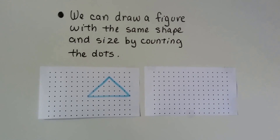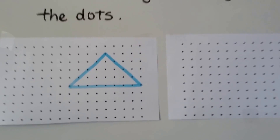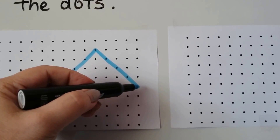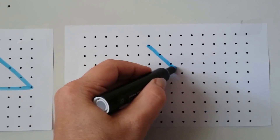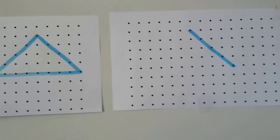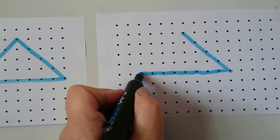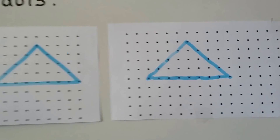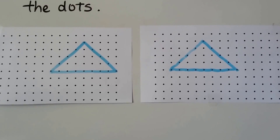We can draw a figure with the same shape and size by counting the dots — we'll count how many units we go. At the top here it goes one, two, three, four units down on an angle. So we could do that here: one, two, three, four units down. Then it went one, two, three, four, five, six, seven, eight units across. So we can do that: one, two, three, four, five, six, seven, eight units across and one, two, three, four units up. Are they the same size and shape? They certainly are. By counting the dots and how many units they were, we can make the same size and shape.